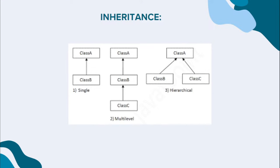From the term you can understand: what do we mean by single inheritance? When a single child class inherits the property of a parent class — for example, class B inherits class A — this concept is called single inheritance.